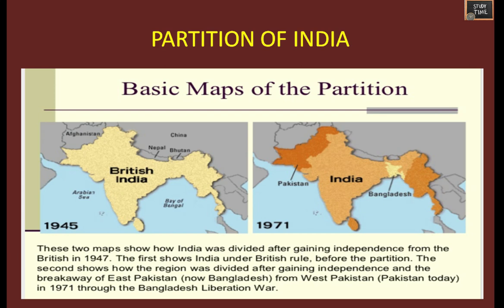During this period there was a partition: India and Pakistan. At the time of independence, Pakistan was divided into West Pakistan and East Pakistan. After 1971, East Pakistan became Bangladesh. So you can remember how India got partitioned during the time of independence.